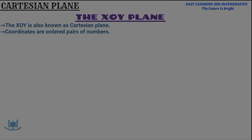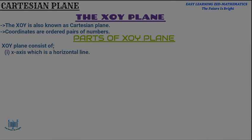The Cartesian plane consists of: one, the X axis, which is the horizontal line; two, the Y axis, which is the vertical line — the standing line; and three, the point of origin, which is marked by zero. So in the X/Y plane you will find the X axis, the Y axis, and the point of origin marked by zero.